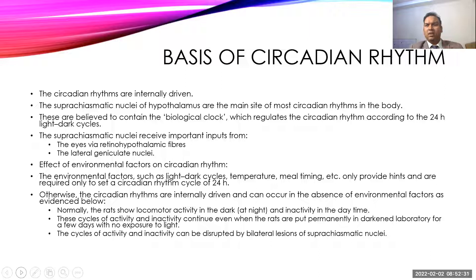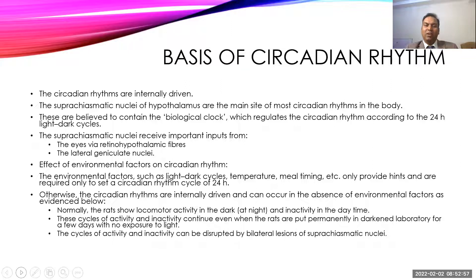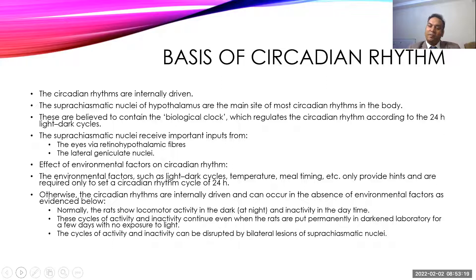An experiment was done with rats, which are normally active at night and inactive during the day. Researchers placed them in complete darkness and never exposed them to light — yet they could still maintain their circadian rhythm, with activity and inactivity patterns preserved. However, once the suprachiasmatic nucleus was destroyed, the circadian rhythm was completely disturbed.